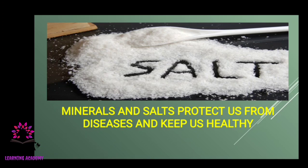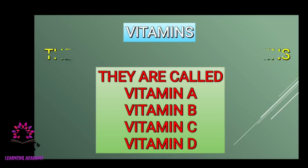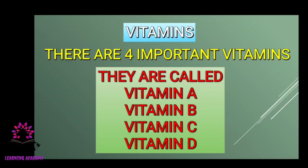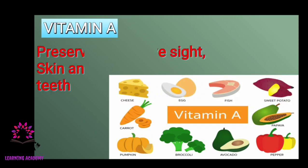Minerals and salts protect us from diseases and keep us healthy. Now, vitamins: there are four important vitamins — vitamin A, vitamin B, vitamin C, and vitamin D. Vitamin A is found in green and yellow vegetables, leafy vegetables, carrot, butter, ghee, milk, and egg. It preserves good eyesight, skin, and teeth.